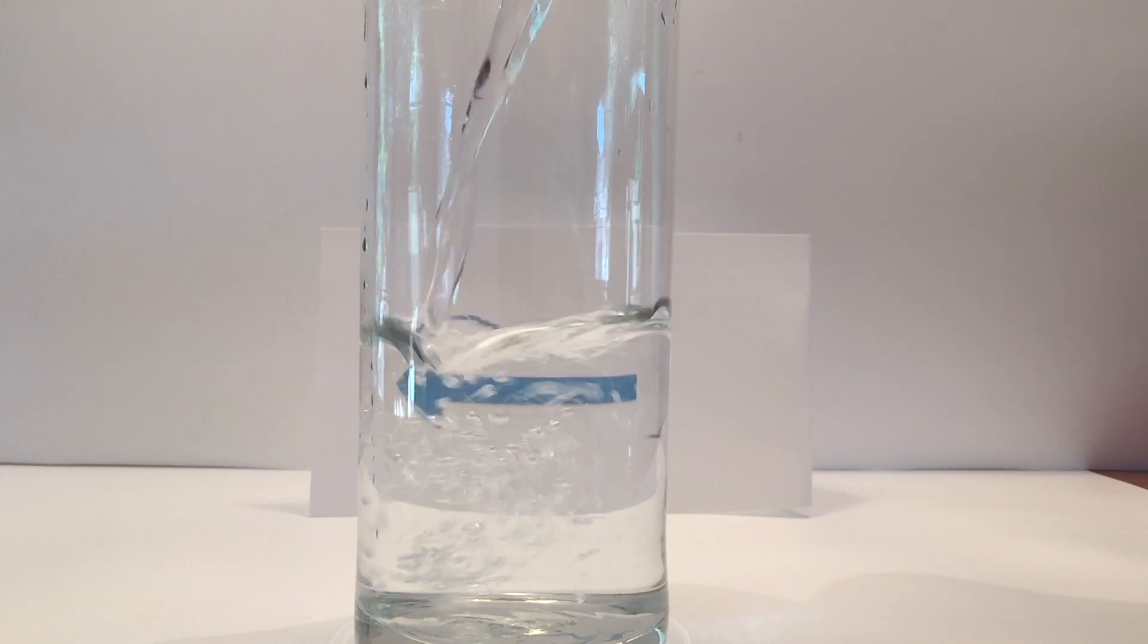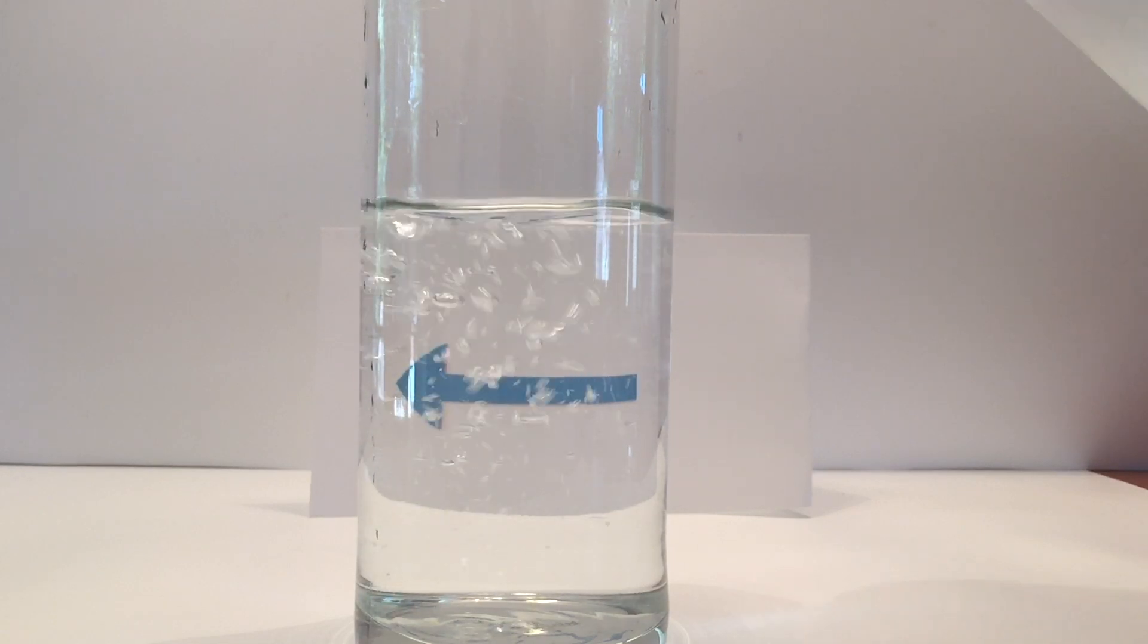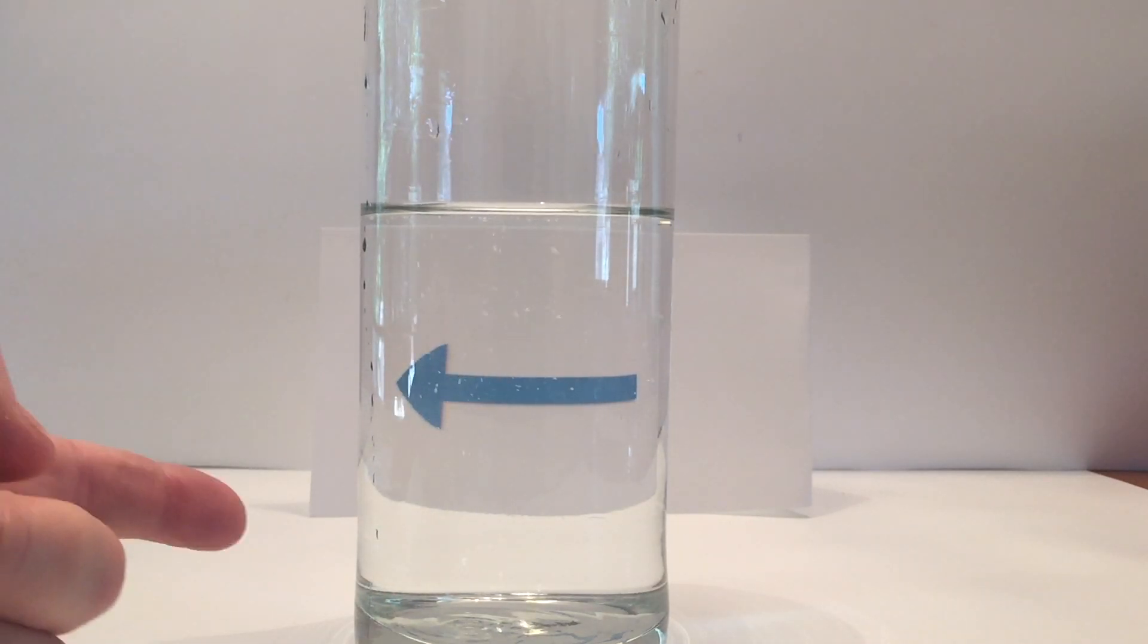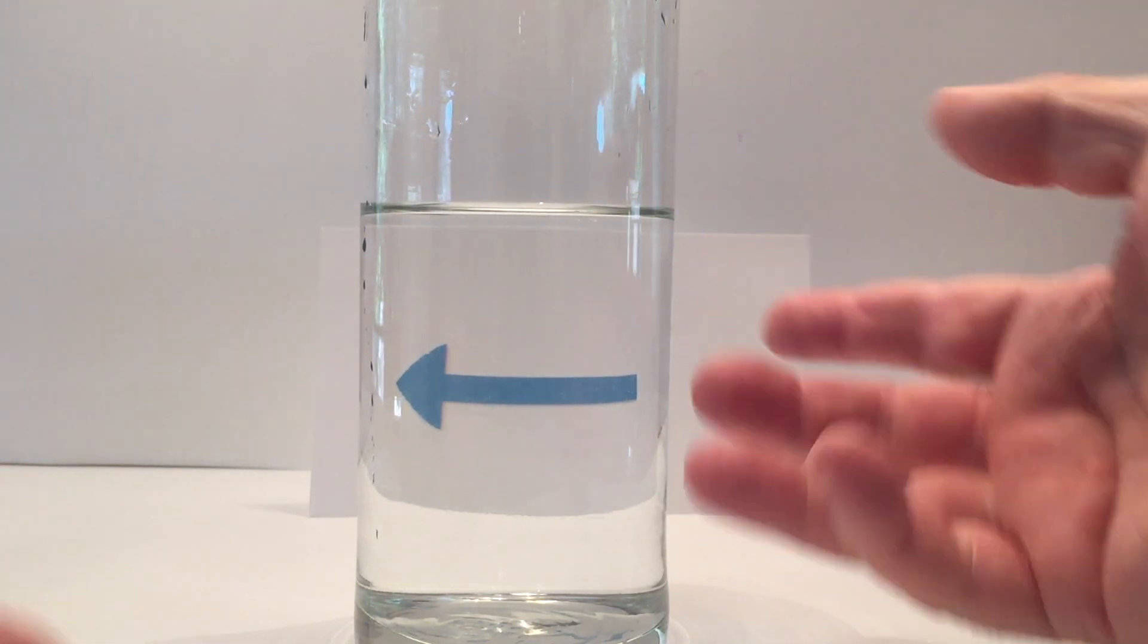Well, you're not crazy. You're not seeing things. In fact, you just demonstrated a physics concept called refraction, the bending of light. When the arrow is moved to a particular distance behind the glass, which is four to five inches, it looks like it reversed itself.